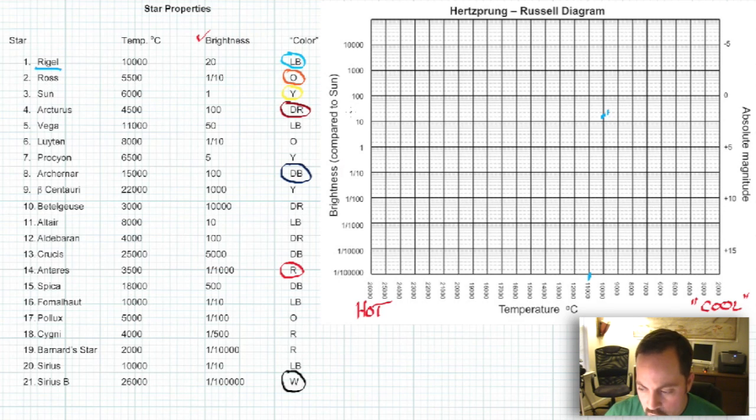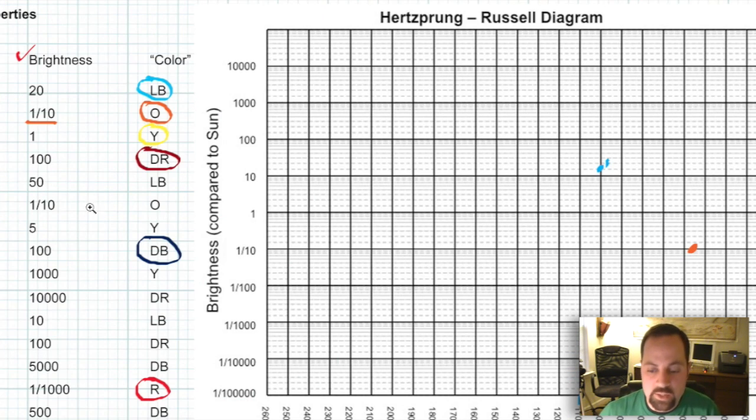Our next star is Ross. Now, if we look over here to the color, we can see that Ross is orange in color. So we're going to get an orange colored pencil, and we see Ross right here has a temperature of 5,500 degrees Celsius. All right, well, we don't have a 5,500 degree line here, but we can pick right in between 5,000 and 6,000, because right between 5,000 and 6,000 is 5,500. So that's the temperature of Ross, but what's the brightness? Well, Ross's brightness is one-tenth that of our sun. Well, fortunately, we have a one-tenth line right here, so we can just count right up, and right on that line, right there, that is the brightness of Ross. That is one-tenth that of our sun. Now, make an orange dot right there, and label it star number 2.